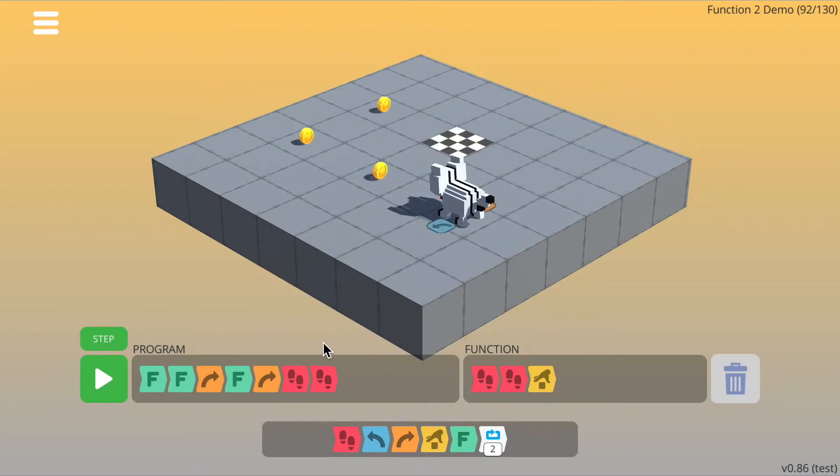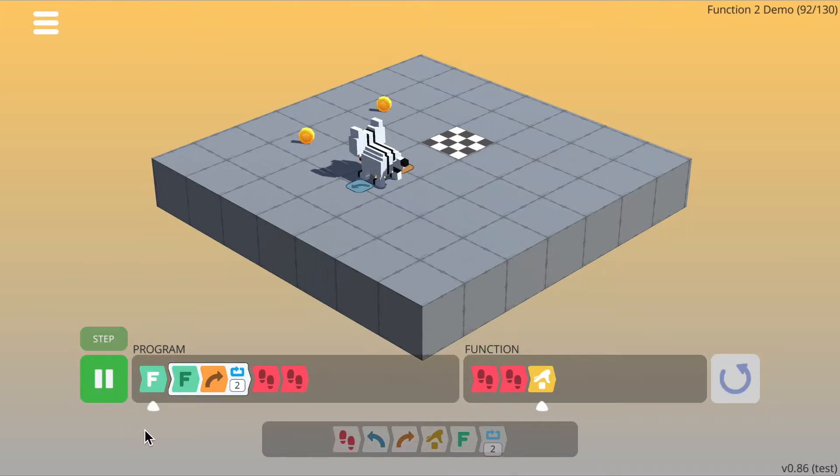So I'll press reset. And if we look at our program, we can see that we've got a candidate for a loop here. We've got function, right turn, function, right turn. So what we can do is we can drag a loop out and put the function right turn into loop. So we're going to do it two times and then remove that. And now that should get to the finished tile and also use fewer commands than ten.